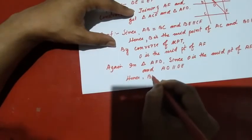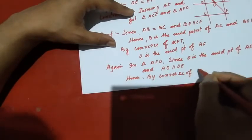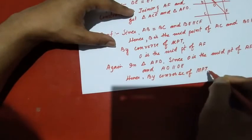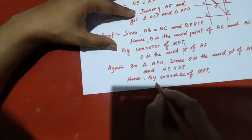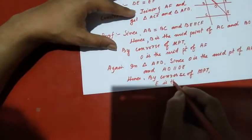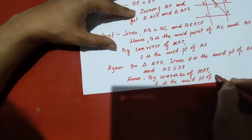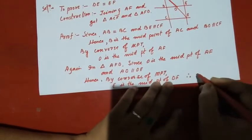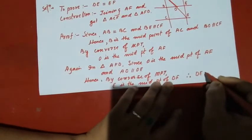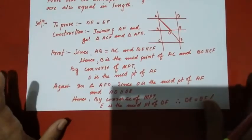By the converse of the midpoint theorem, E is the midpoint of DF. Since O is the midpoint of EF and by applying the converse of the midpoint theorem in triangle EFD, we get that E is the midpoint of DF. Therefore, DE is equal to EF. Hence proved.